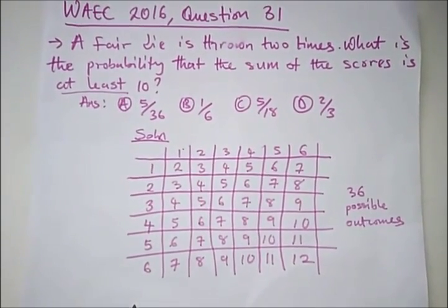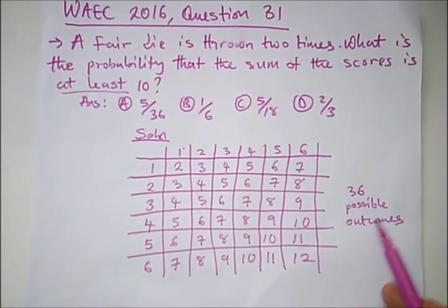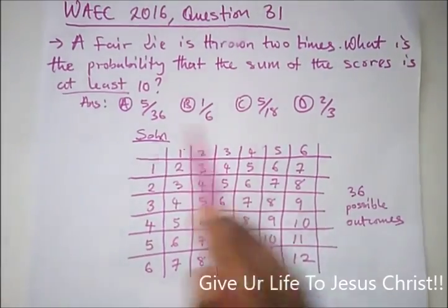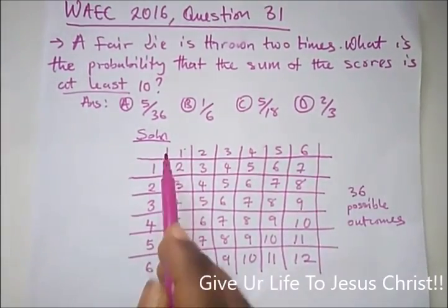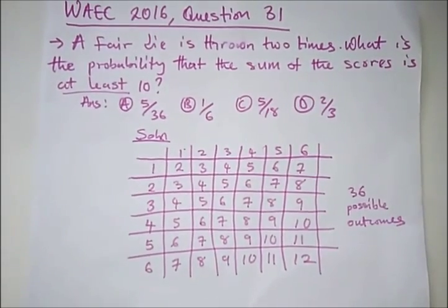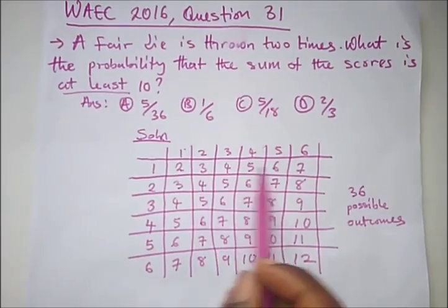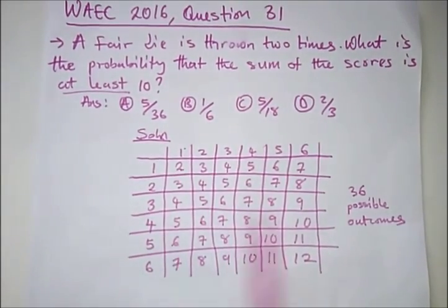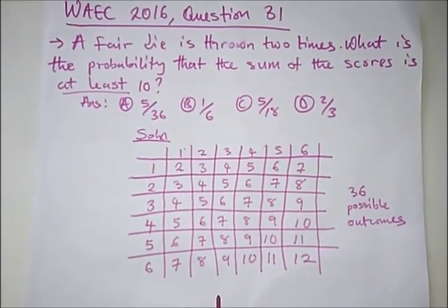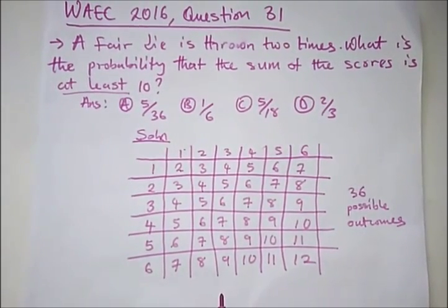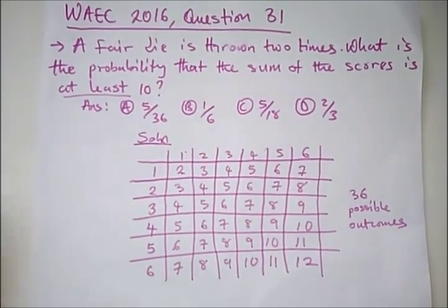So here, in throwing a fair die twice, there are 36 possible outcomes. I have drawn a particular table for you. This is the first die, the second die. And when you throw them twice, you either get a 2, 3, 4, this is the table to know the outcomes, the possible outcomes. And the question says, what is the probability that the sum of the scores is at least 10? That is the sum of the two dies.